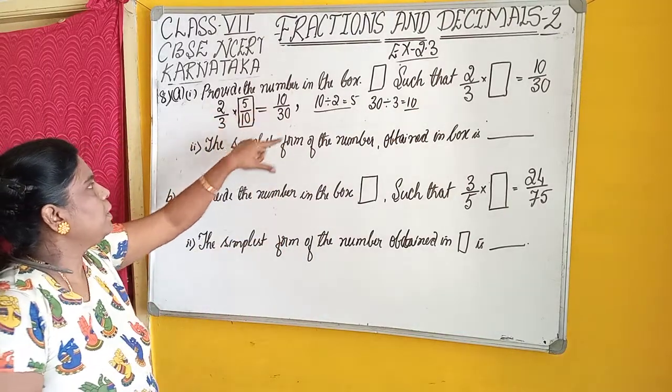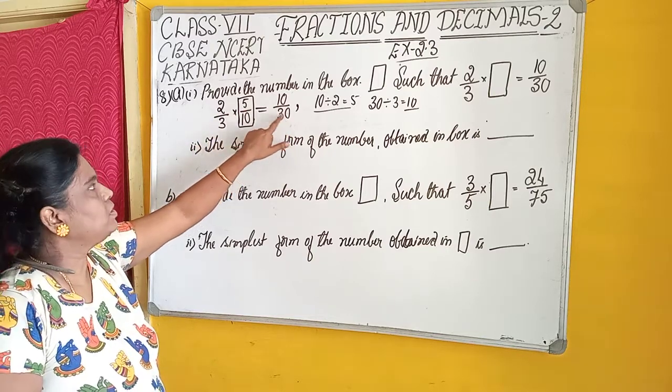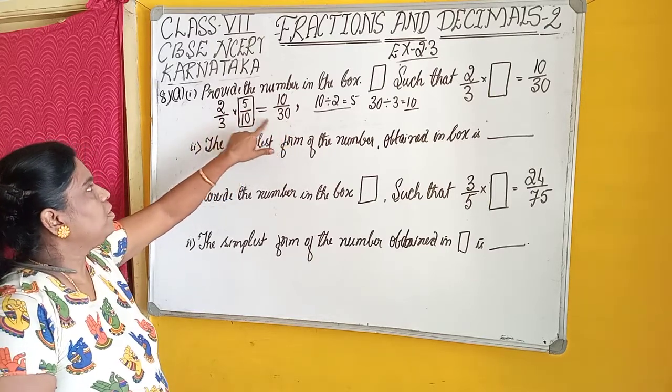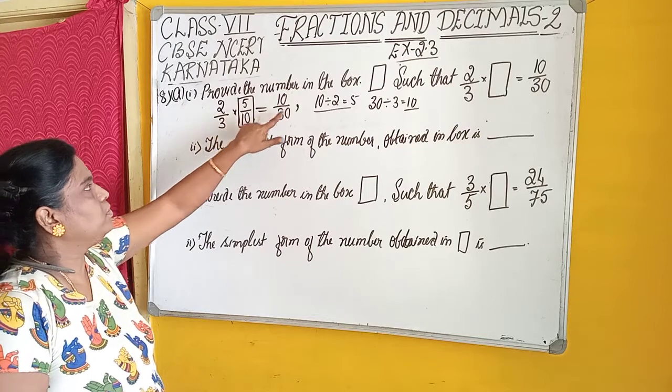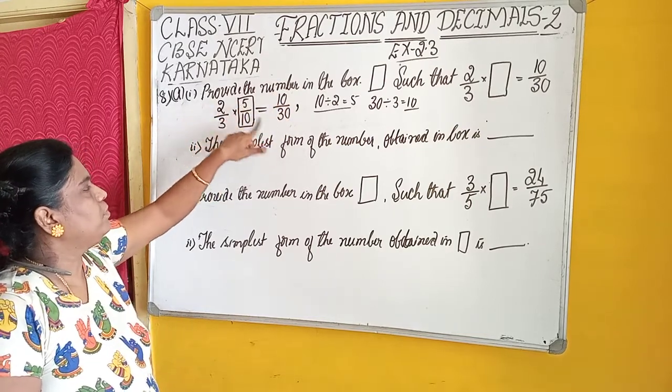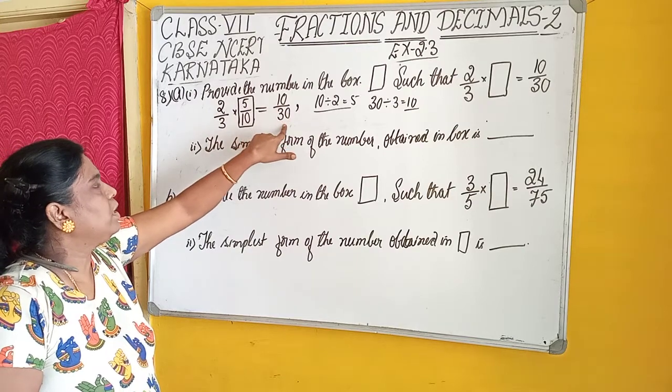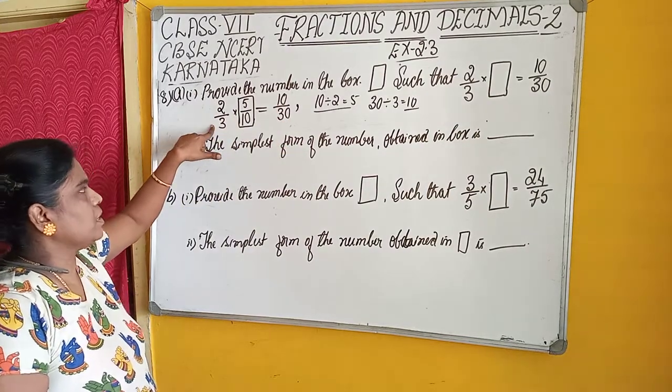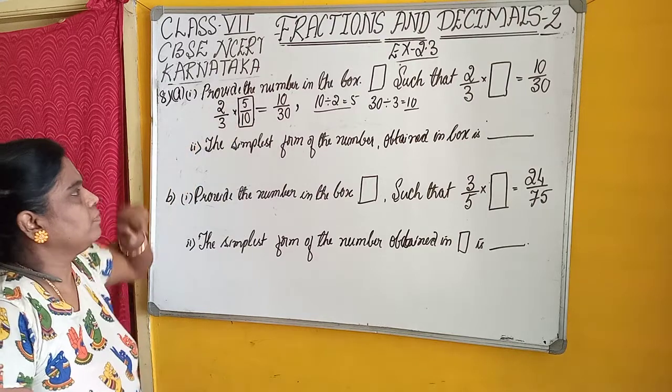When we multiply it, 2 times 5 and 3 times 10. Okay, we got it, isn't it? Therefore, to get this number, we have to divide this number by this. We will get 5, and divide this by 3, that equals 10.